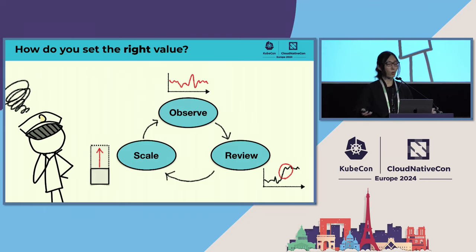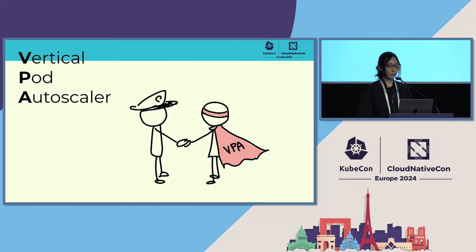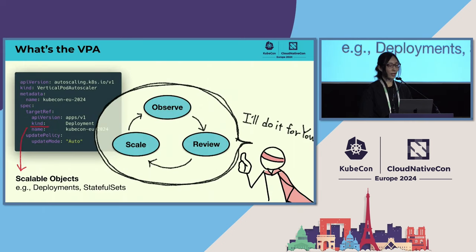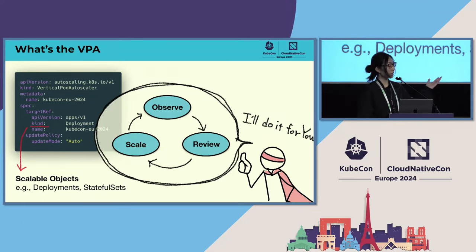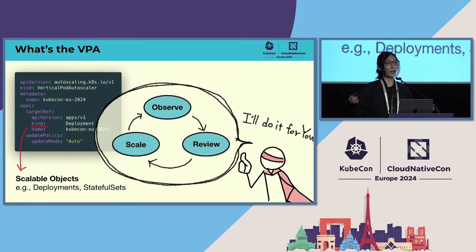We are typically managing multiple workloads, so it takes real effort to handle all of them. Vertical Pod Autoscaler — VPA — can be your hero in dealing with that. VPA is one of the Kubernetes SIG Autoscaler projects. If you write a manifest like this, VPA will analyze the resource usage and then provide scaling recommendations. Supported workloads are scalable objects such as Deployments and StatefulSets.